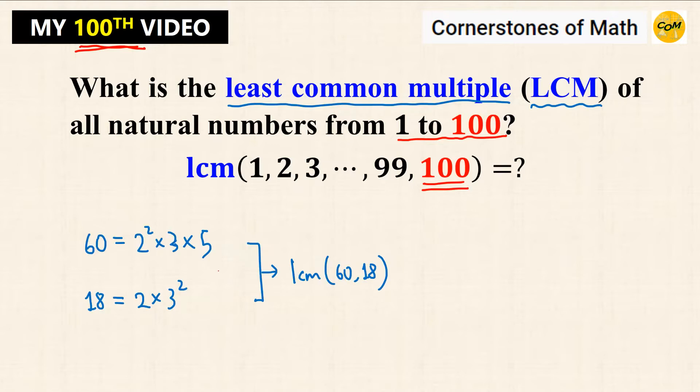Okay, first of all, you might already know that in order to find the least common multiple, you must first find the prime factors of the given numbers. Which means we have to find all the prime factors of the natural numbers from 1 to 100.